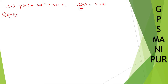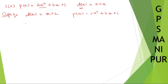Write down d(x) — it is 2 plus x. But what you are going to do is modify and write it in descending order: x plus 2. And p(x) is already in descending order: 2x squared plus 3x plus 1. Now d(x), which is x plus 2, divides p(x), which is 2x squared.